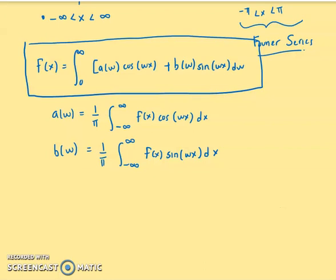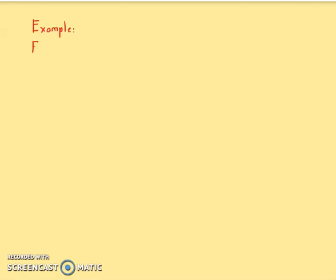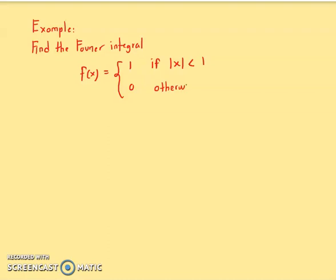Let's look at an example. We have the function f(x) = 1 when |x| < 1, and 0 otherwise. To find the Fourier integral, we first need to find a(ω), which is given by (1/π) ∫_{−∞}^{∞} f(x) cos(ωx) dx.